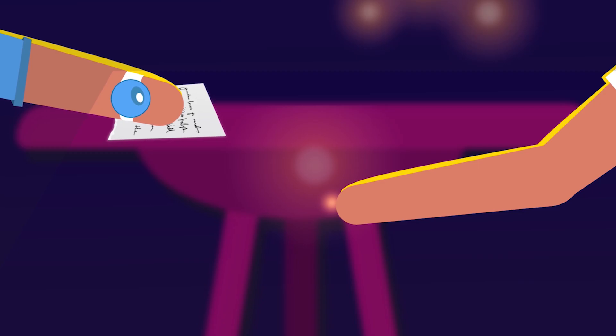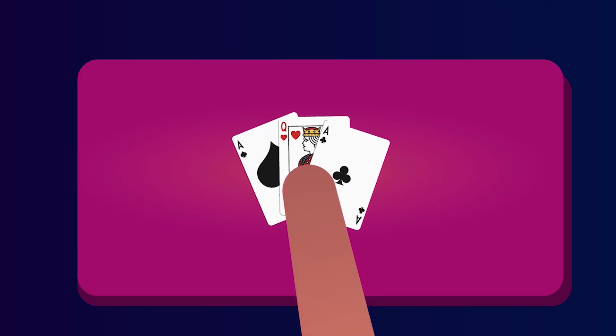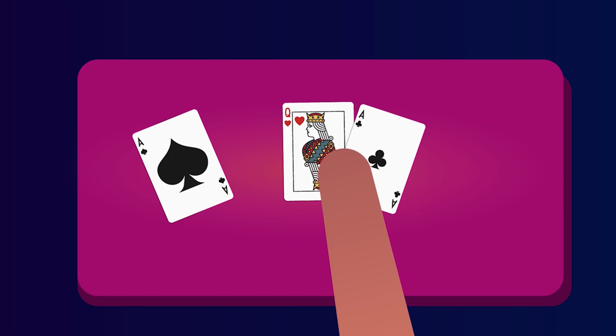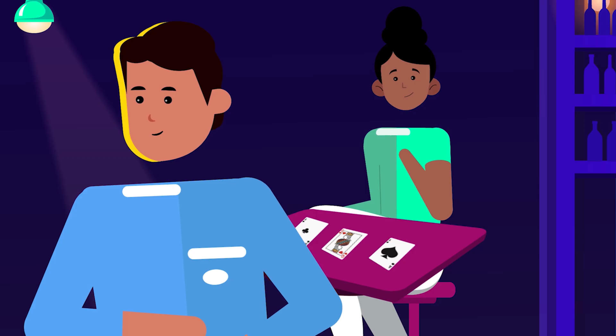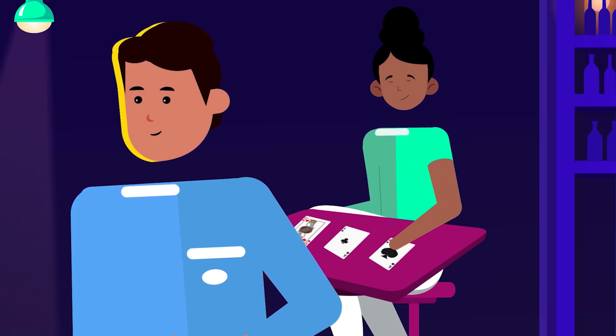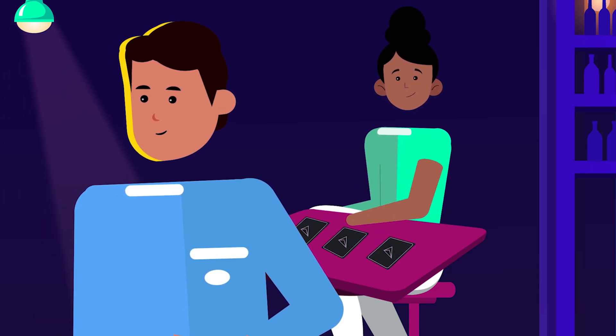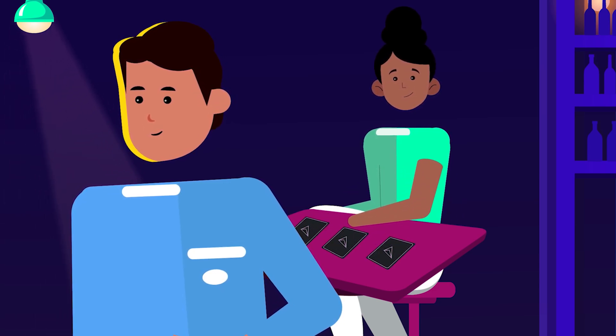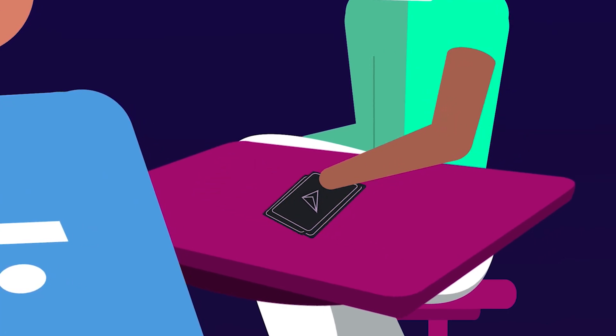Alex lays out three cards: the ace of spades, the queen of hearts, and the ace of clubs. Looks away and asks Taylor to choose a special card, swap the other two, and then flip the cards over. Alex instructs Taylor to shift the cards around the table, mixing them even further.